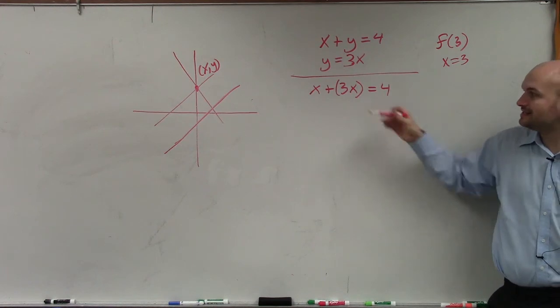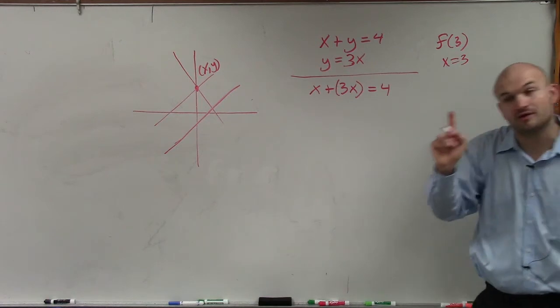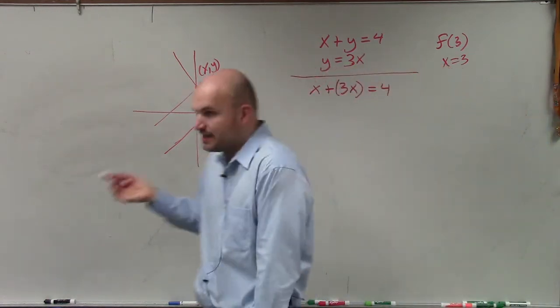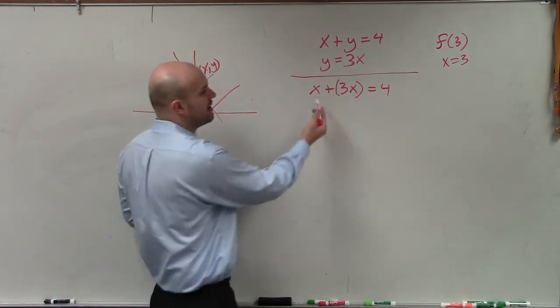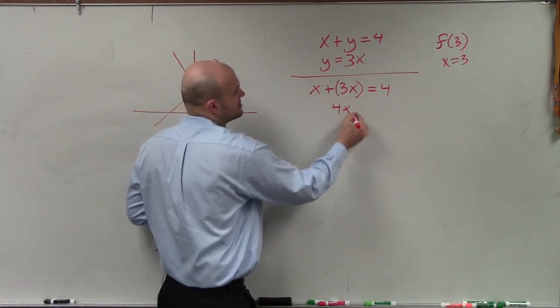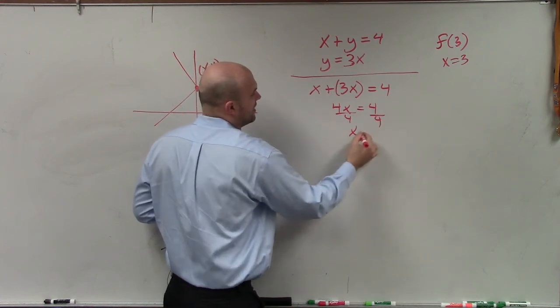And the reason why I did that is because now I have an equation with only one variable. I only have one equation and I have one variable. And as far as solving, I can solve equations with one variable in one equation. So x plus 3x is 4x equals 4. Divide by 4, divide by 4, x equals 1.